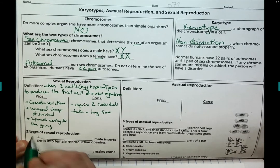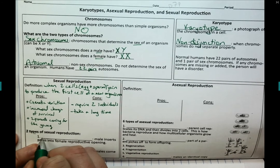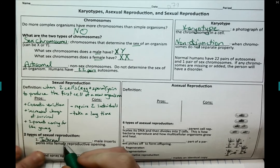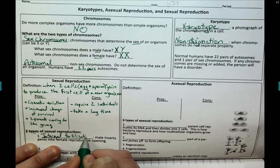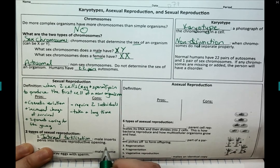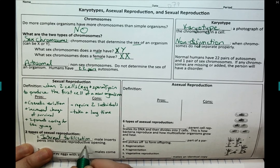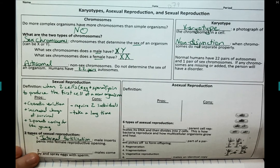There are two types of sexual reproduction. The first is internal fertilization, which is when fertilization occurs inside the female reproductive organ. The male has to actually insert the penis into the female — that's internal. That's how humans reproduce, and the female would carry the offspring until it is born.